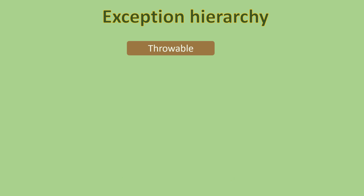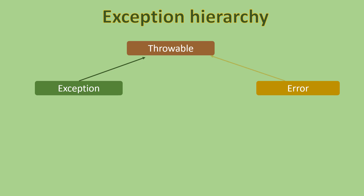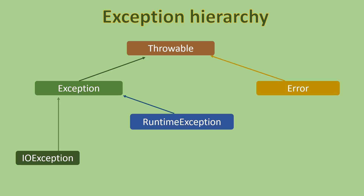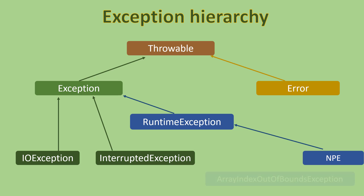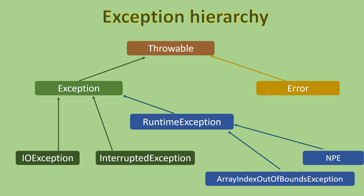All exception classes extend Throwable, which contains the message or the reason of exception. Throwable is extended by Exception and Error. Exception represents events generated by the application, while errors are not in application control. RuntimeException is a child class of Exception and represents exceptions generated by programming errors. Exception and its child classes are called checked exceptions, while RuntimeException and its child classes are called unchecked exceptions. This is a very commonly asked interview question — the difference between checked and unchecked exceptions — and now you know the answer.